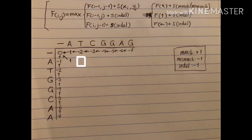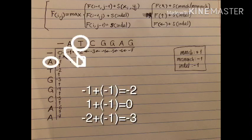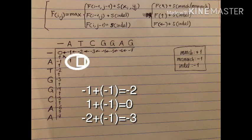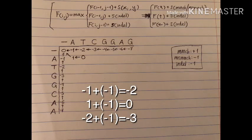For the next cell, the value is the maximum of three options. The diagonal cell has value minus one, plus a mismatch because we have an A and a T, giving minus two. The cell to the left has value one, plus indel (minus one), giving zero. The cell up top plus indel gives minus three. The maximum is zero, so we write it and draw an arrow to the left, since the one is the value that produced this zero.